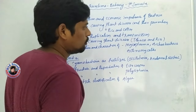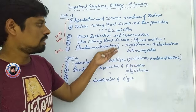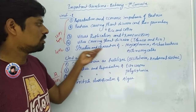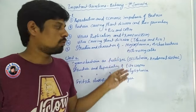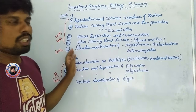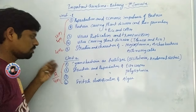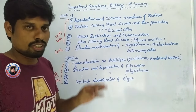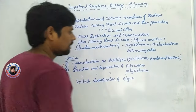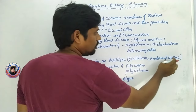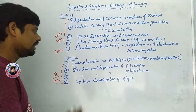The structure of mycoplasma, Archaebacteria, and Actinomycetes — each is an individual structure and is important for 4 marks. Mycoplasma is 4 marks and Actinomycetes are 4 marks. Coming to Cyanobacteria as a fertilizer — Cyanobacteria acting as a biofertilizer is a key topic worth 2 marks.